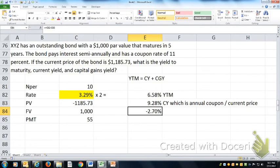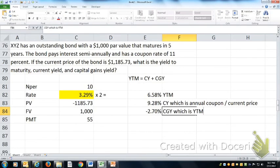But one thing we know is the capital gains yield, which is yield to maturity minus the current yield, it's negative because the price of this bond, holding all else constant, is going to drop from $1,185.73 to $1,000 as it matures over the next five years.